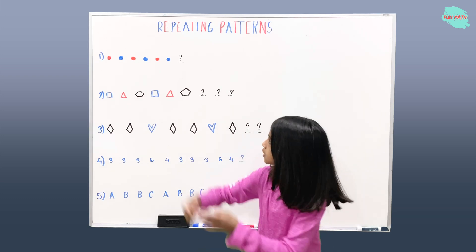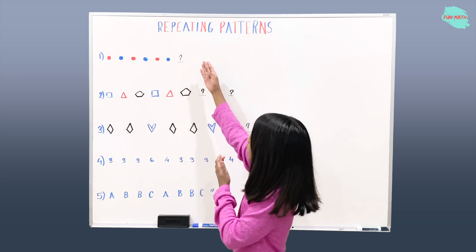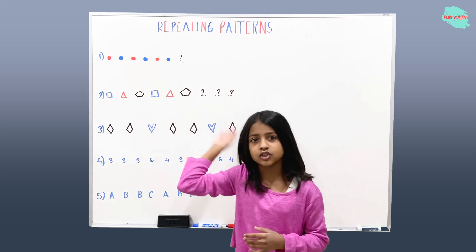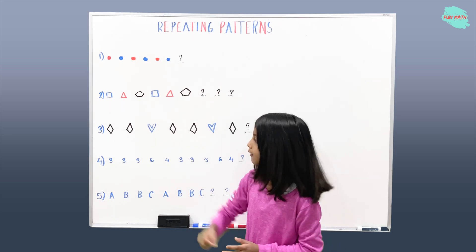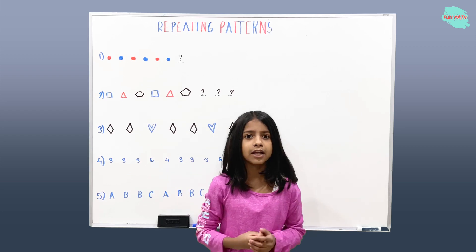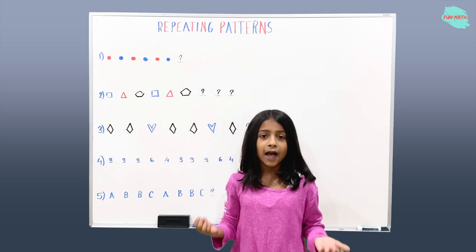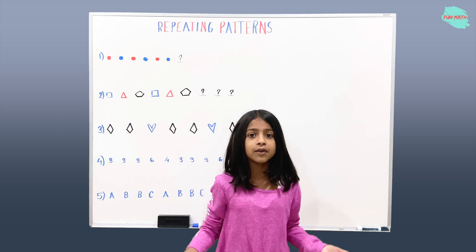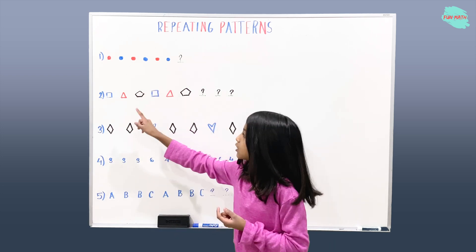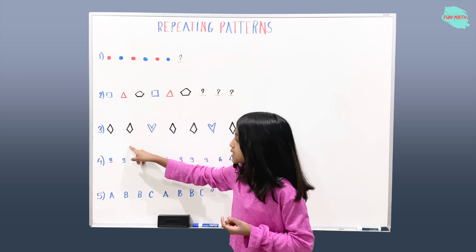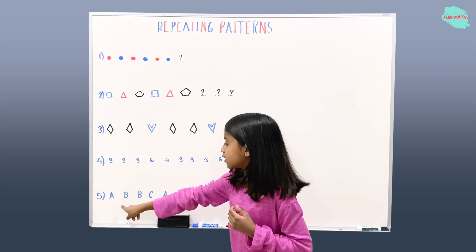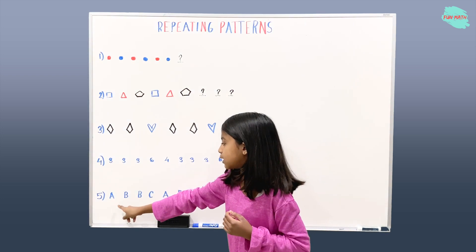So the pattern in the title is blue, red, blue, red, blue, red, and so on. Here I have five examples to understand repeating patterns. Patterns are everywhere around you — patterns are in colors, patterns are in shapes, patterns are in numbers, and patterns are in letters.